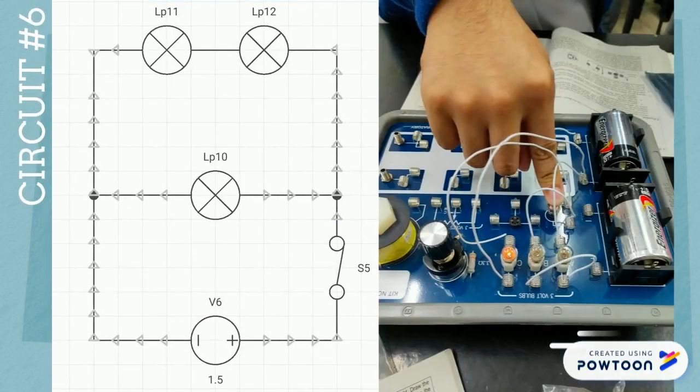The two light bulbs in circuit number 6 were arranged in series and showed a lower intensity of light as compared to the light bulb parallel to them.